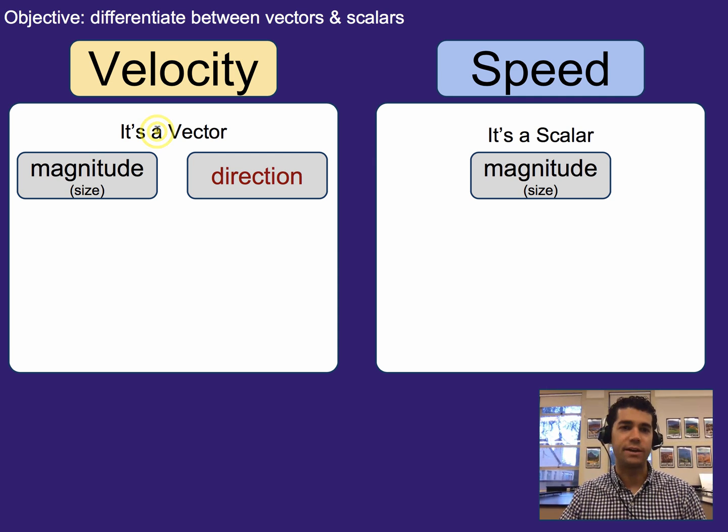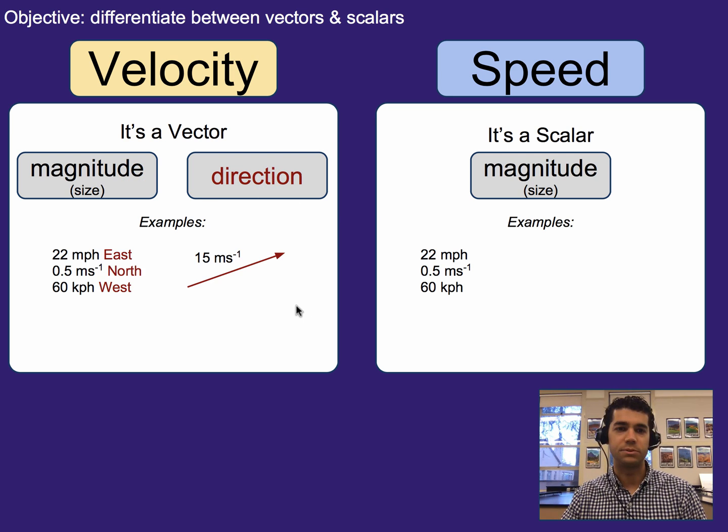Velocity, on the other hand, is a vector, which means it has size or the magnitude, but it also has a direction. Here we have 22 miles per hour, or 0.5 meters per second, or 60 kilometers per hour. Those are all speeds because they just have a size or magnitude.